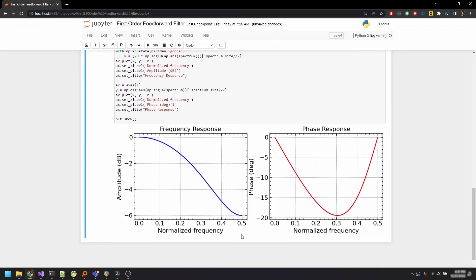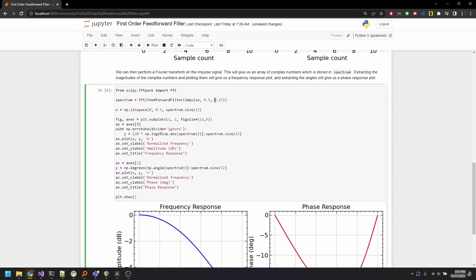More importantly, the phase response is completely changed, and this is no longer a linear phase filter since the coefficients are no longer symmetric about 0. I'm not even going to try and explain the shape of the phase response curve here, since I have no intuitive understanding of it either. Let's try one more set of coefficients: 0.5 and negative 0.5.